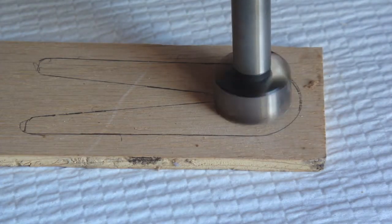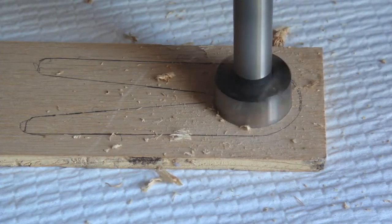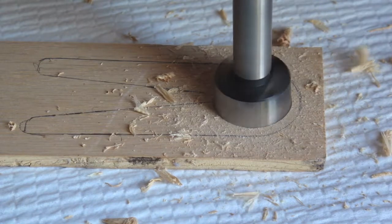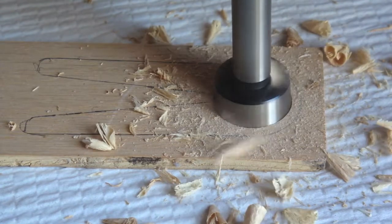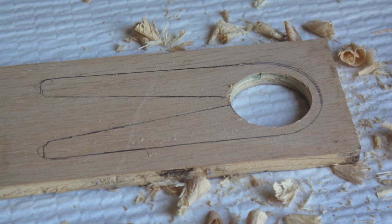If they are available to you, Forstner bits cut the holes smoothly and quickly. If they are sharp and used properly, no sanding will be needed.